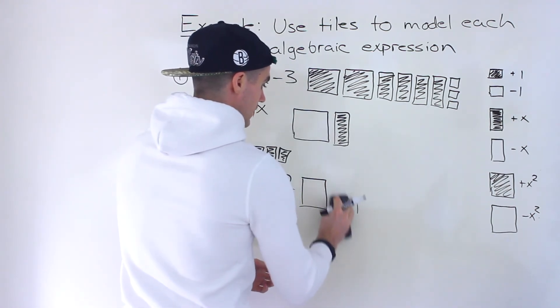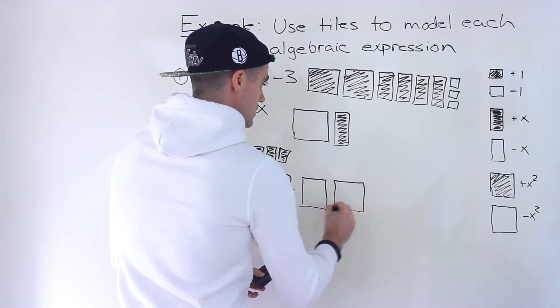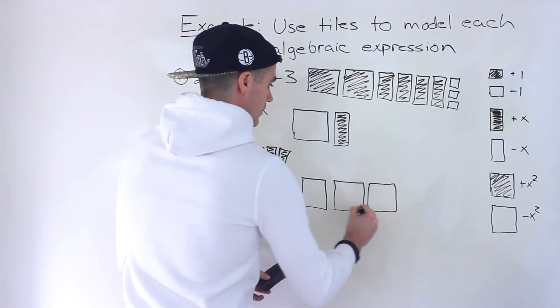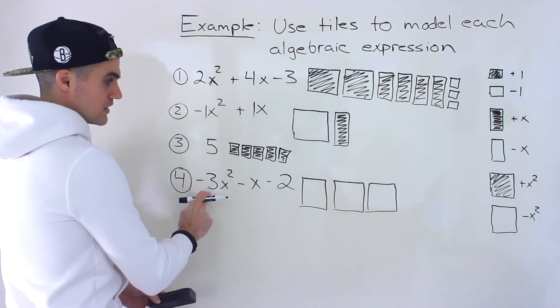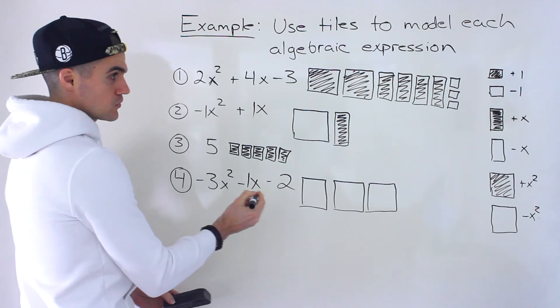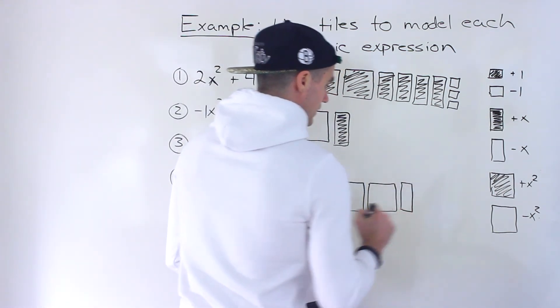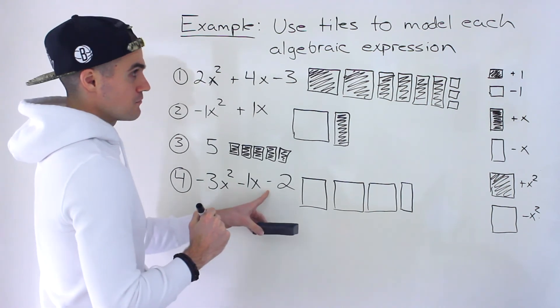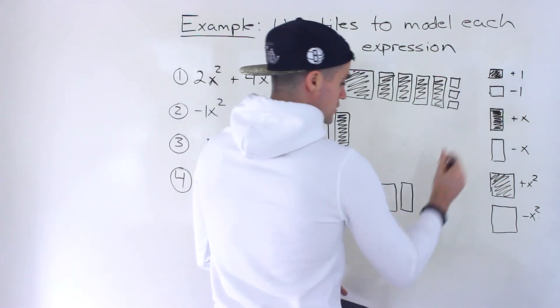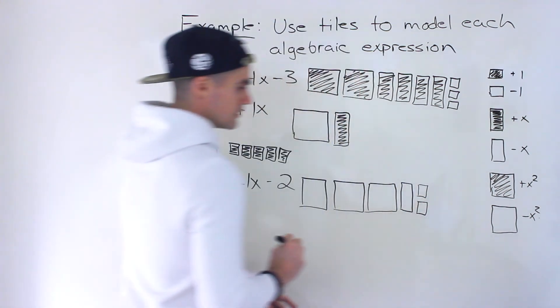This kind of looks like a rectangle actually. So just got to be careful with the drawings here. Three of these - minus 3x squared - minus x. So it's like a minus 1x. There's only one of these over here, so that would be like that. And then we have minus 2. So there would be two of the small squares like that.